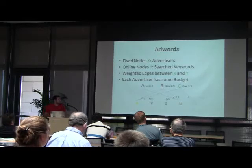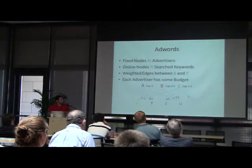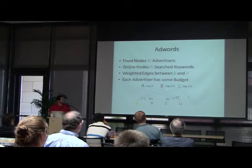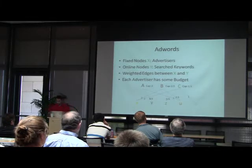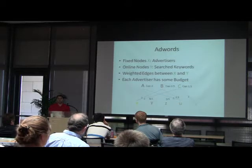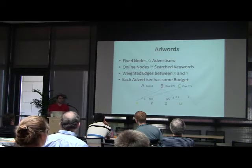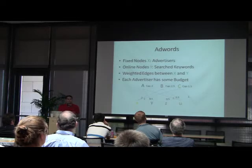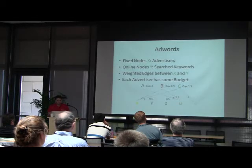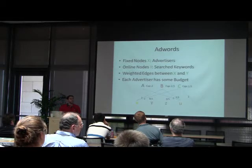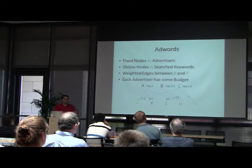The optimal solution is to assign Z and V to advertiser C, assign X to B, and U to A. Whenever an online node arrives, you have to make a decision whether to allocate it to some advertiser or just throw it away. There are two main different settings: the sequence of online nodes can arrive in an arbitrary adversarial order, or in a random permutation order.